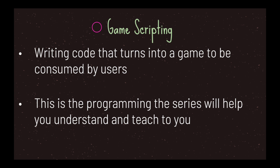The last area of game programming is game scripting. This is the general picture in your head when you think of a game programmer — basically writing code that turns into a game to be consumed by users. This is the programming this series will help you understand and teach you to do. There are many different areas of game scripting: environmental scripting, player scripting, animation scripting, and much more. Keep in mind that most of the time you will be handling game scripting, so before you try to get into third party modules or even game engines, first understand how to program and make games.